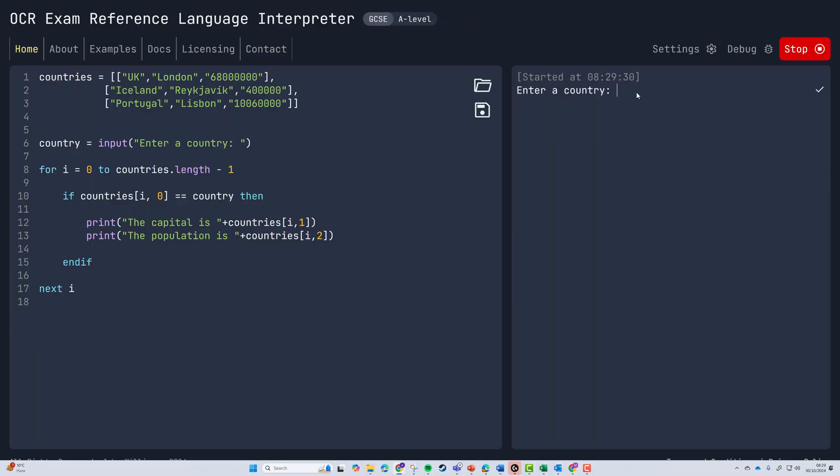So if I run the code and type in Iceland, it will first of all be checking index zero, which is going to be this array, that doesn't get matched up. Then it will check the second array and the first index will equal Iceland, so we print out Reykjavik and 400,000. If I type in a country not here, then it won't be able to find it because it's not matching up, so it's not giving us anything at all. But it is still iterating through each of our arrays within the 2D array.